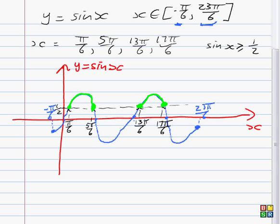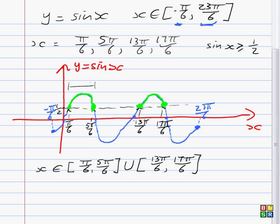So the question is what are the x values over which the graph is bigger than or equal to a half and those x values are, looking at the graph above, from π/6 to 5π/6 as well as 13π/6 to 17π/6. Those x values correspond to that part of the graph and those x values correspond to that part of the graph.